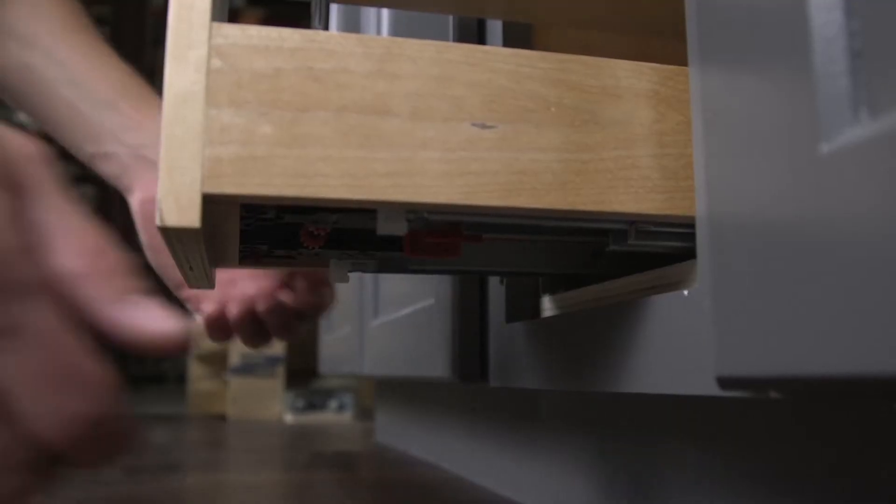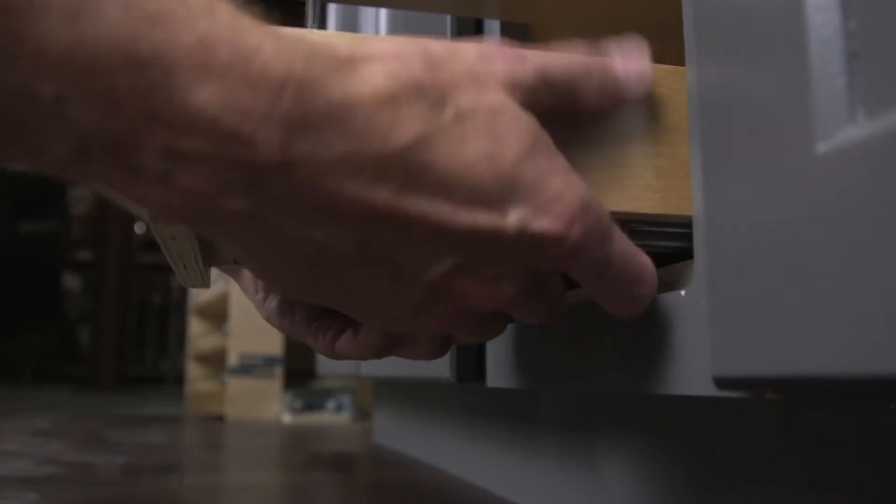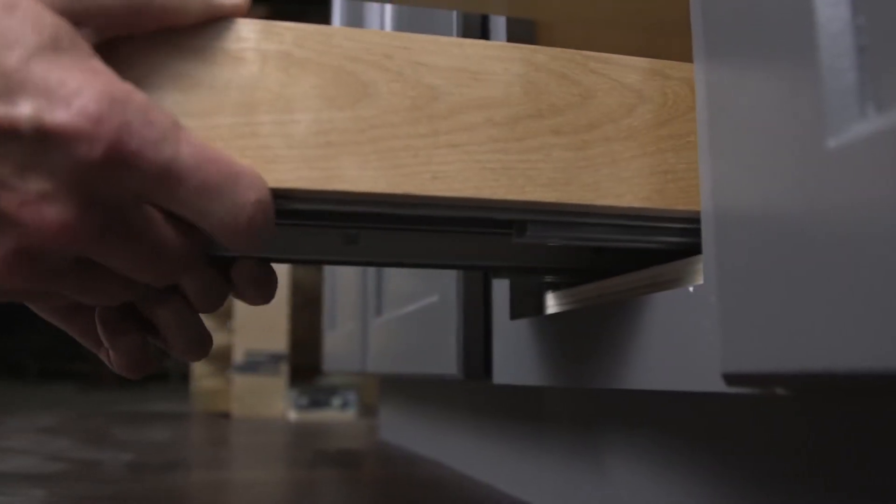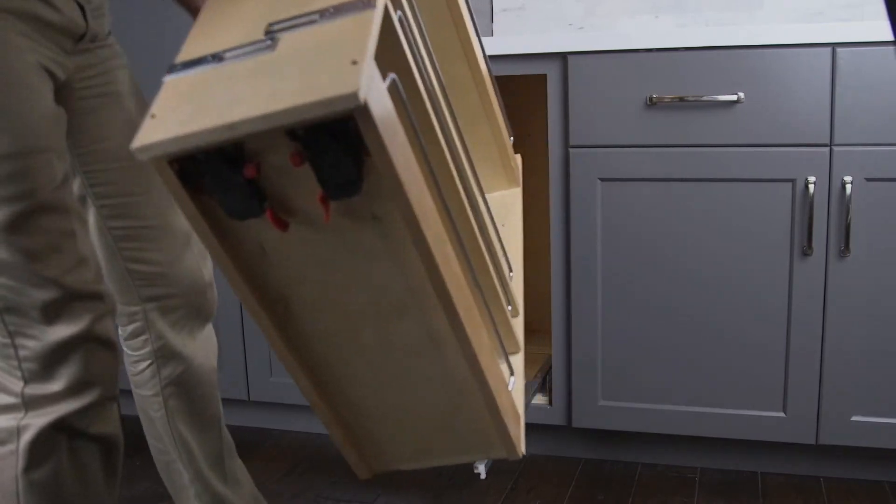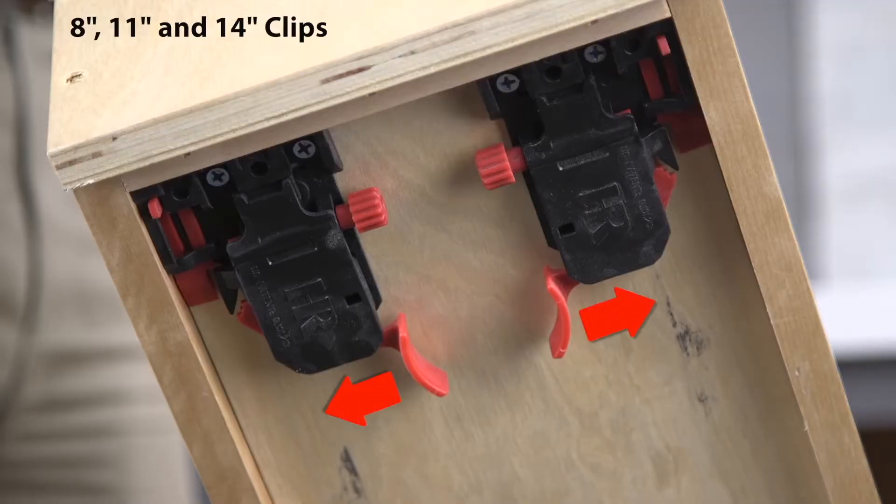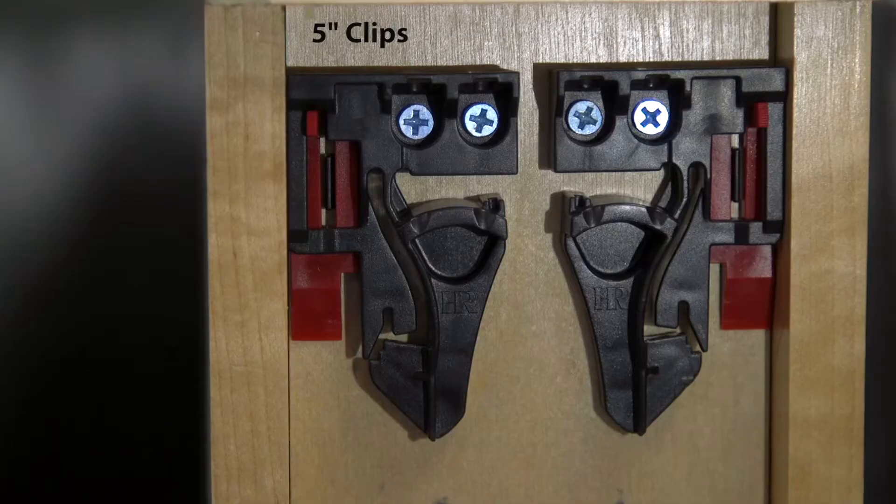Remove the unit from the base by releasing the clips. On the 8, 11, and 14 inch models, the clips release when pulled to the side of the unit. The clips on the 5 inch unit are pulled forward to release.